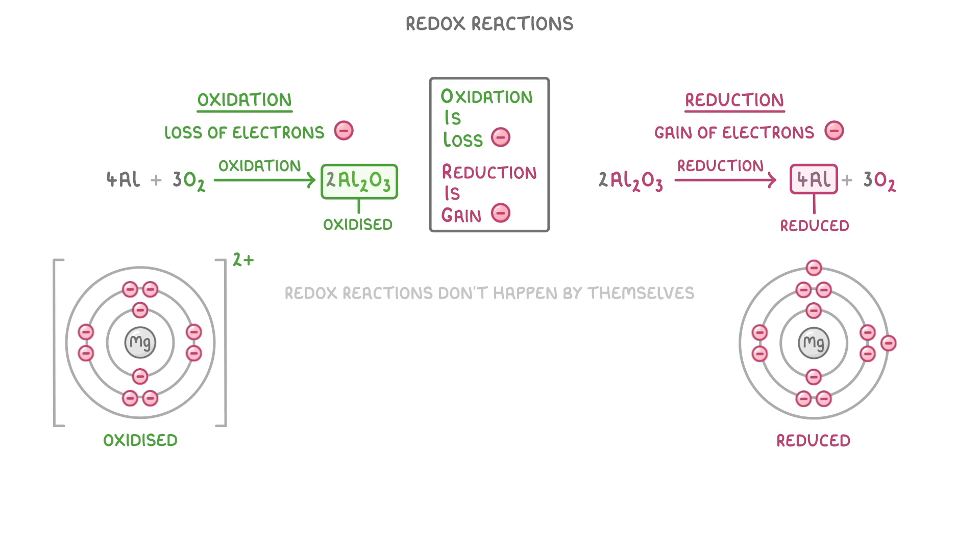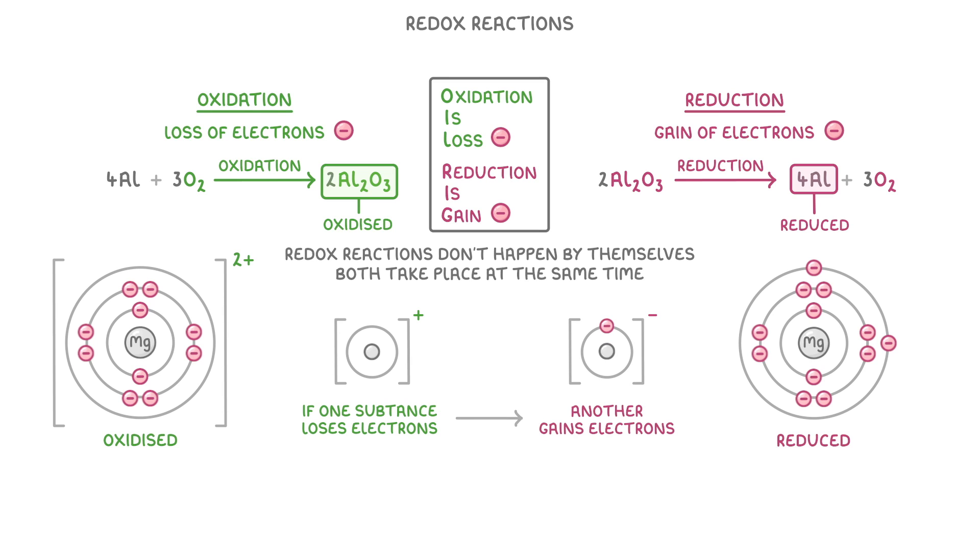Most of the time though, these oxidation and reduction reactions don't happen by themselves. Instead, they both take place at the same time. Because if one substance loses electrons, then another substance has to gain them. And because both happen together, we call them redox reactions, which just means reduction oxidation reactions.